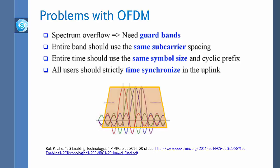A third problem is that the entire band must use the same symbol size. Since symbol size equals 1 divided by subcarrier spacing, if you fix 15 kHz spacing, the symbol size is fixed for everyone — whether you are far or close to the base station, you use the same frequency spacing. Finally, everyone must be strictly time-synchronized, so all transmissions must align precisely in time.